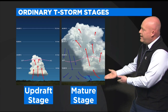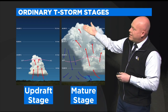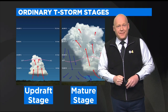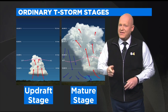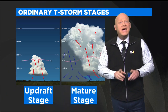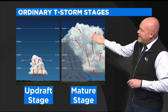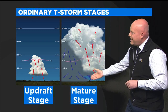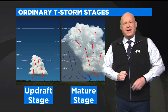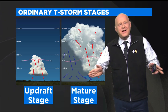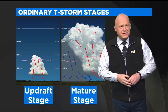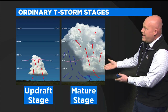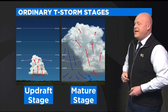You have a storm with an updraft being fed by warm, humid air and a downdraft, which is the precipitation coming out. Now remember, we talked about these only last 15 to 30 minutes. Here's why. As that downdraft hits the surface, it will spread out. Can you see that little cold front right there? It's called a gust front. And as that colder air spreads across the surface, it cuts off the updraft that was feeding that storm.